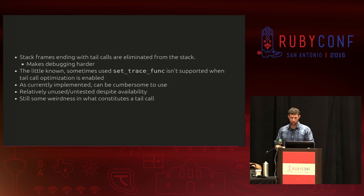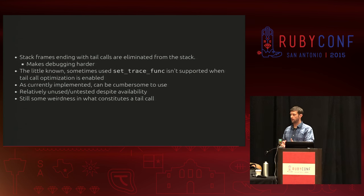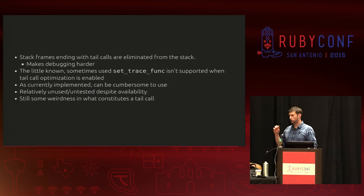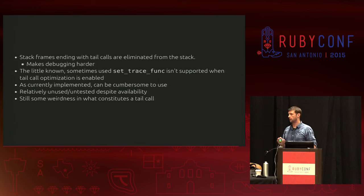In my experimentation I found there's still some weirdness around what constitutes a tail call. The VM finds it hard to figure out when it doesn't need the rest of a method body. In some cases I had to do weird things to get to a point where it would know 'I don't need the rest of this method, I can leave.' In some cases just putting a nil at the end made it optimize, whereas otherwise it would hold on just in case.